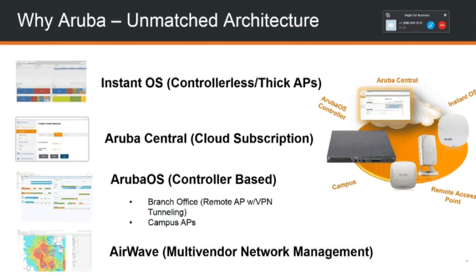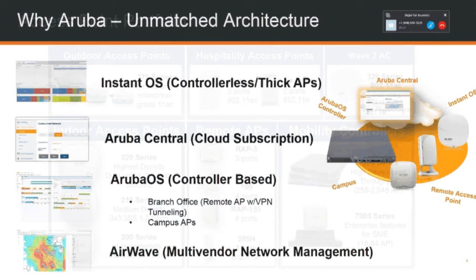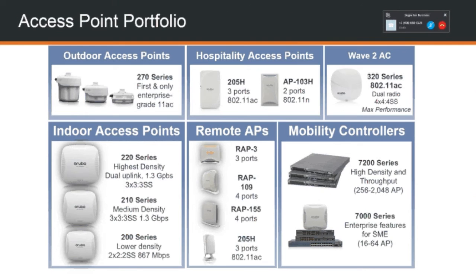Let's take a look at our portfolio of hardware. Starting at the top left, we have our outdoor access points — our 270 series. These are really geared towards outdoor or extreme environments, such as freezers and doors, and can withstand temperatures down to negative 40 Fahrenheit. They include limited lifetime warranties, which is unheard of for outdoor access points — not typical in the industry at all. Each can handle roughly 100 to 125 clients.